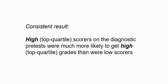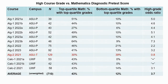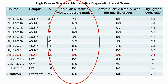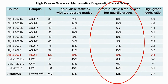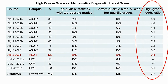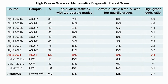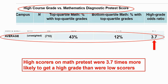The consistent result is that high scores are much more likely to get high grades. Looking at the mathematics diagnostic pretest data: students who scored in the top quartile on that pretest had substantially higher probabilities of getting a top quartile grade in their course, compared to students in the bottom quartile. The ratio between those two probabilities is generally two-to-one, three-to-one, four-to-one — almost four to one on average. High scorers are much more likely to get a top grade.